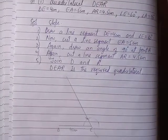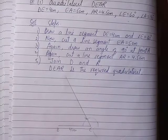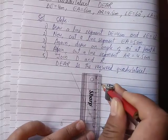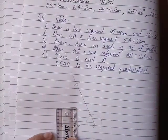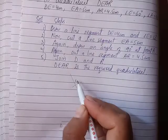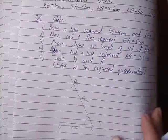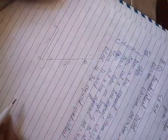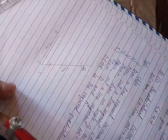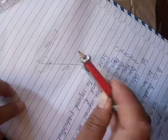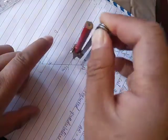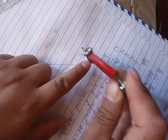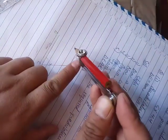Cut a line segment of 5cm, because EA is 5cm. Then draw an angle of 90 degrees at point A. Using a compass, draw the 90-degree angle.